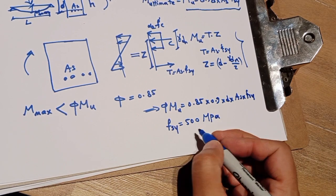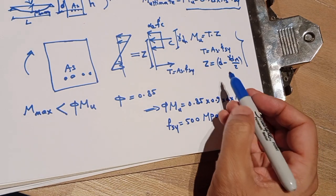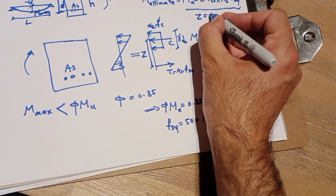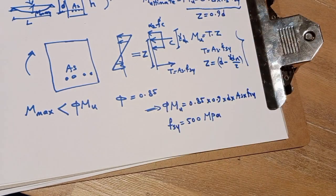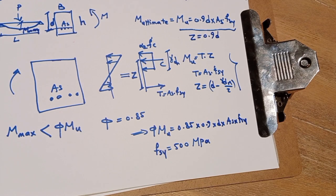So this is very simple estimation, but it is very accurate in most of the cases. If you use Z equal to 90% of d, it gives you a very good estimation of bending moment capacity of reinforced concrete section.